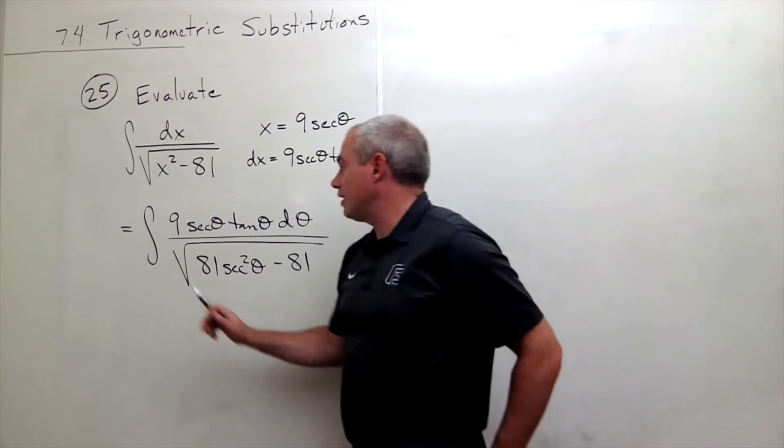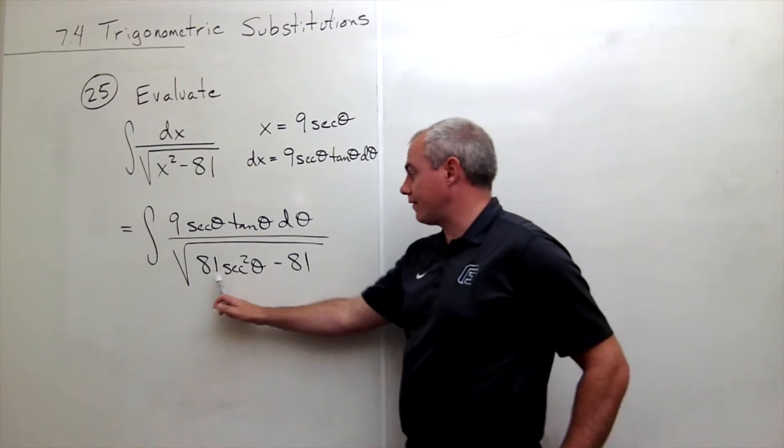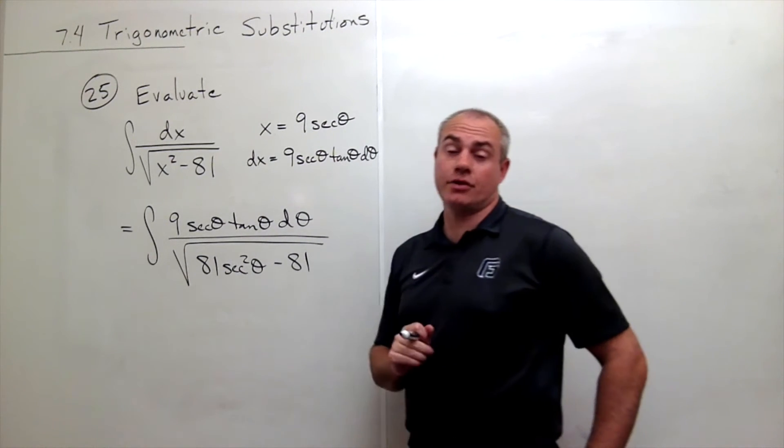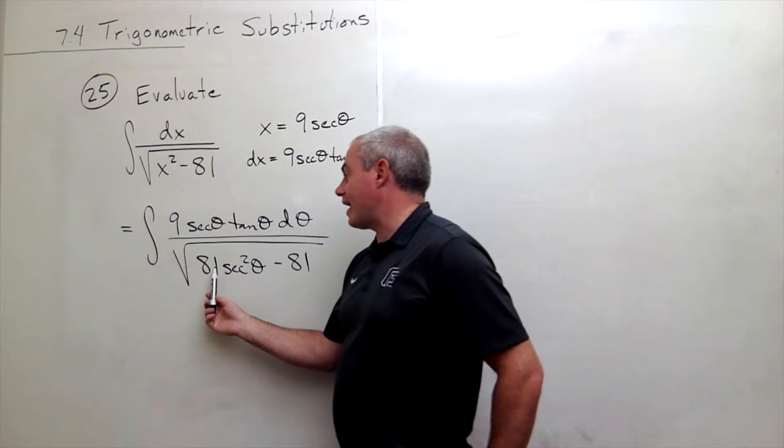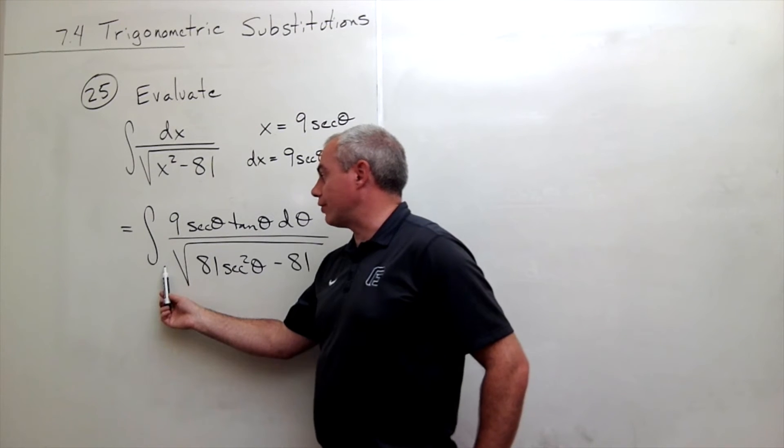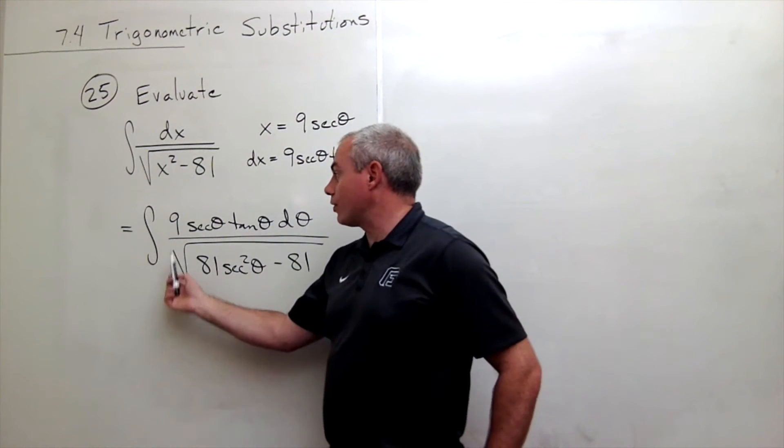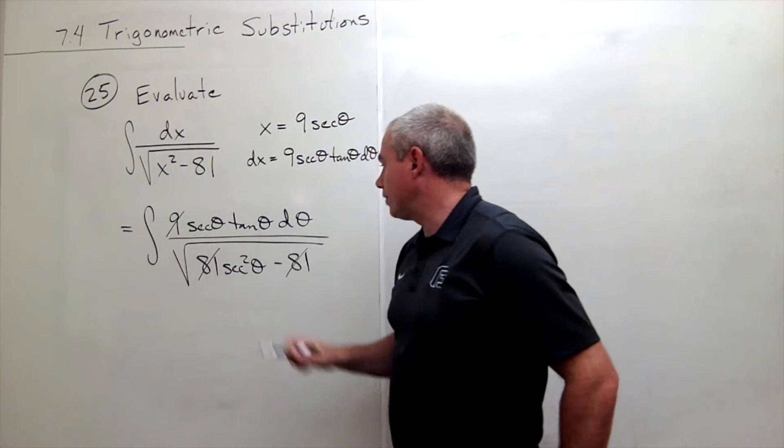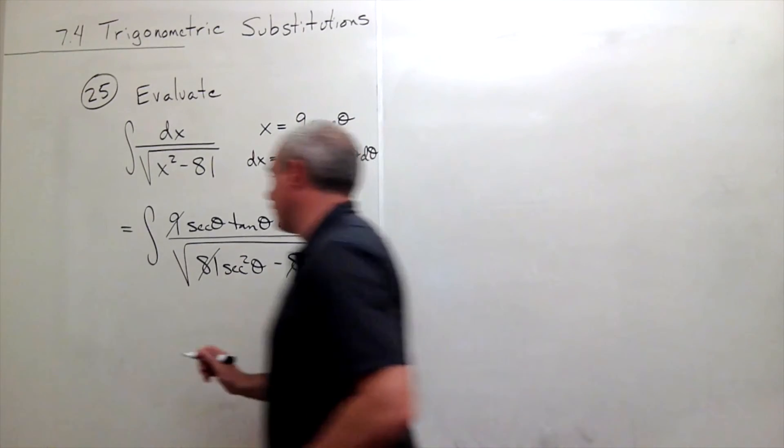I have a 9 on top and an 81 as a factor on the bottom inside the square root. When I pull that 81 outside the square root, I get 9. That 9 cancels with the 9 on top. Let's rewrite.